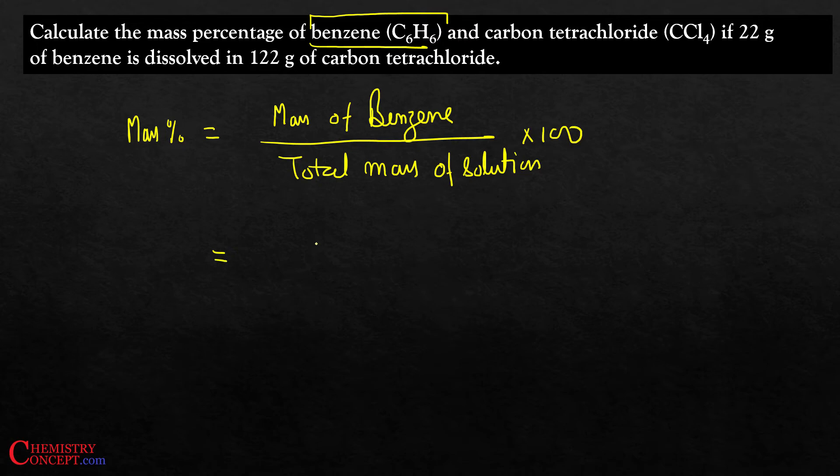Now what is mass of benzene? 22 gram. What is the total mass? Total mass will be mass of benzene plus mass of carbon tetrachloride. That is 22 gram plus 122 gram into 100.